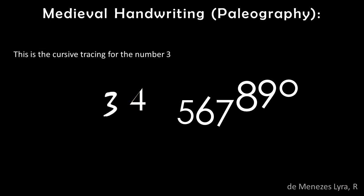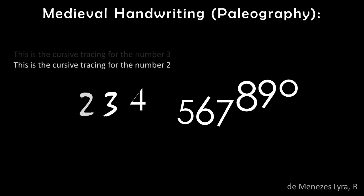This is the way the third digit is written, with three angles — this is the cursive tracing for the number 3. This is the way the second digit is written, with two angles — this is the cursive tracing for the number 2.